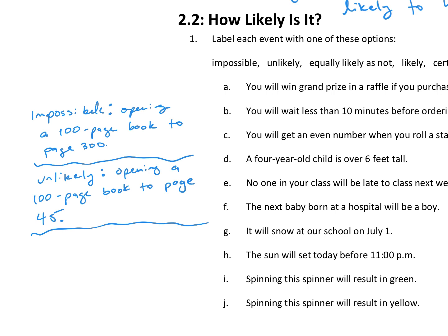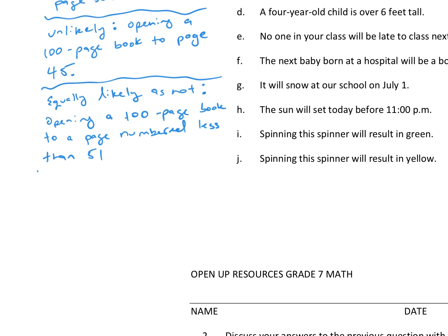Equally likely as not would be opening a 100-page book to a page numbered less than 51, right? Because there's going to be 50 pages, 1 through 50, and then 51 through 100 is also 50 pages, so they both stand an equal chance of happening.